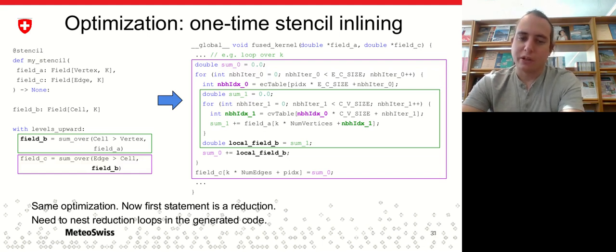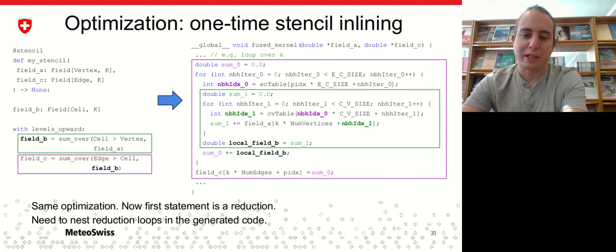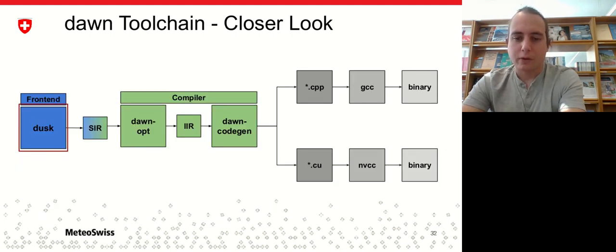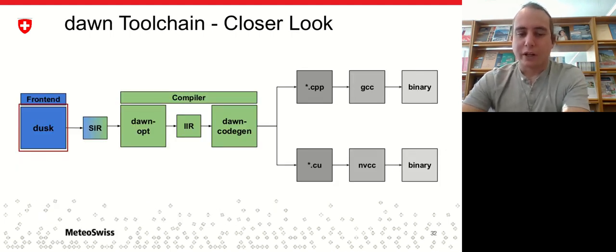And this works not only with simple pointwise stencils. For example, what we can also do is we can inline one reduction into another, which would then lead to this for loop within a for loop, which would basically be a nested reduction. So again, this is the same optimization, but a little bit more involved.